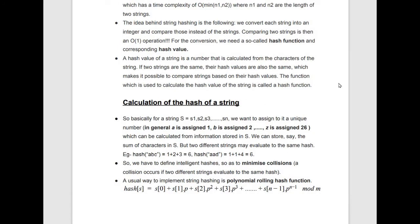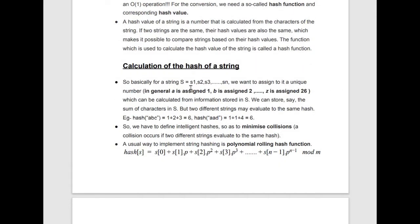To calculate the hash of a string, suppose the string is s1, s2, s3, ..., sn, and the hash function is the sum of the characters in s. The hash value is the sum of the value of each character. We assign a particular value to every character: 'a' is assigned 1, 'b' is assigned 2, and so on until 'z' is assigned 26. This will be the standard assignment for the whole video.